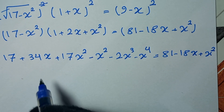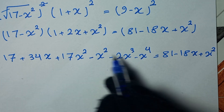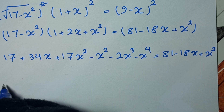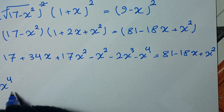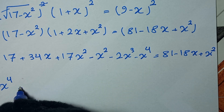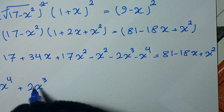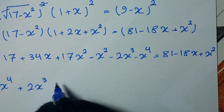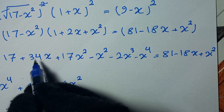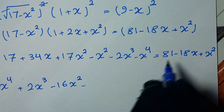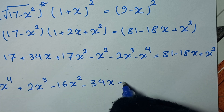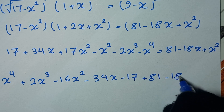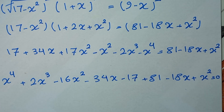In the next step we take all of these parts to one side. It will be negative x to the power of 4, and 16x squared taken to this side gives negative 16x squared, and 34x to this side gives negative 34x, and we take negative 17 to this side. Here we have positive 81 minus 18x plus x squared is equal to 0.